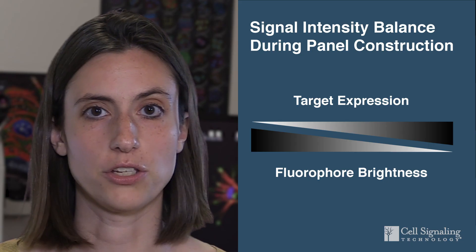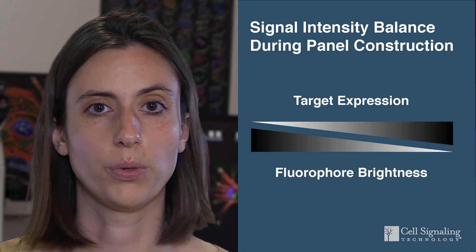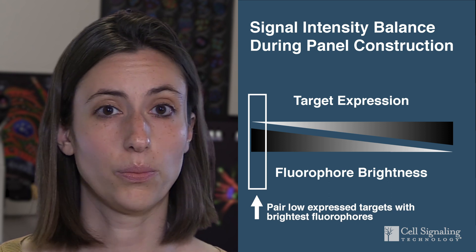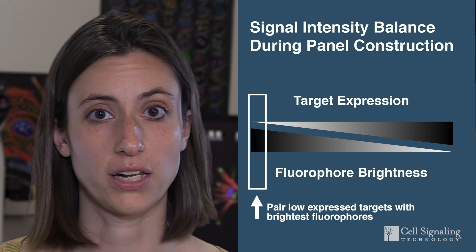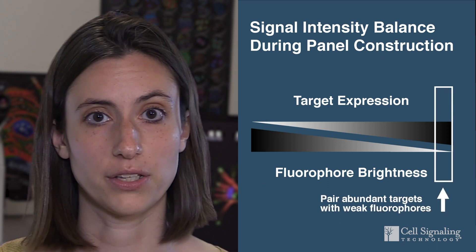Second is fluorophore pairing. The goal of this step is to get a balanced set of signals. A good practice is to start by pairing antibodies for targets with low expression with the brightest fluorophores in your panel, while pairing the antibodies against the most abundant targets with weaker fluorophores.